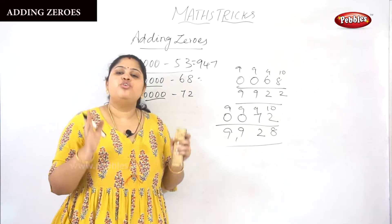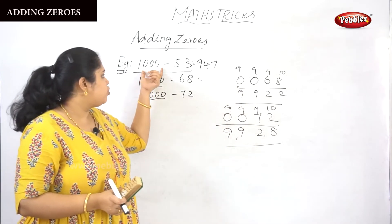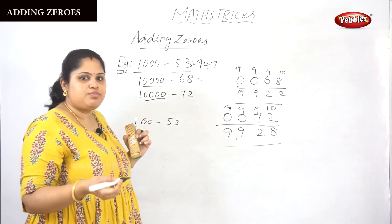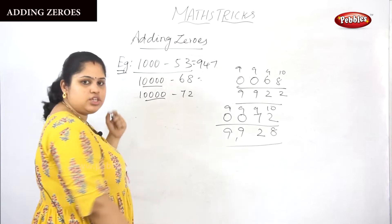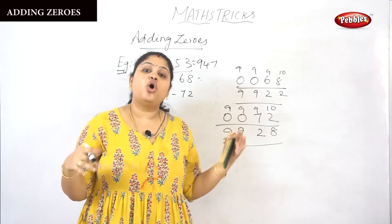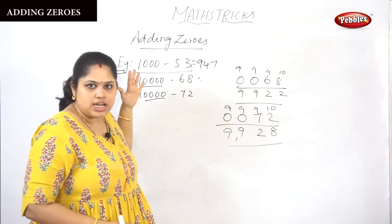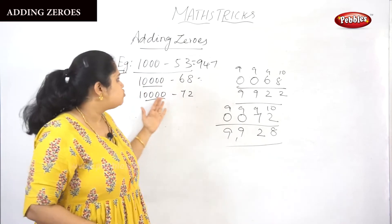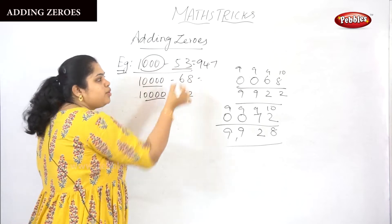Adding zero method is not anything new. The main thing we want to see is whether the number of zeros equals the number of digits given. For example, 100 minus 53 — you can go with the base method, all from the nine and the last from the ten, because there are two zeros and two digits. The left zeros should be equal to the right side digit count. In the adding zero method, if the condition is not satisfied — for example, three zeros on the left but only two digits on the right — even then, if you add a zero to the number, you can perform all from the nine and the last from the ten.